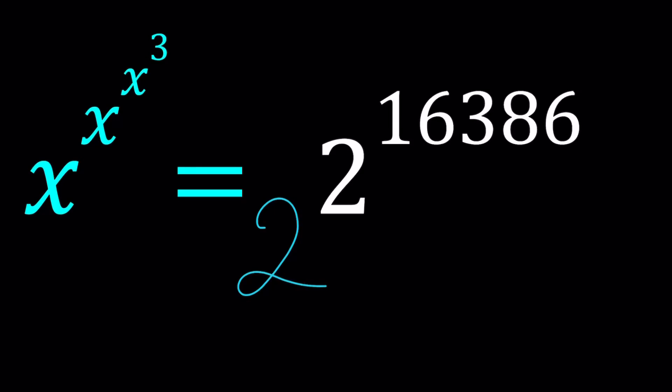Hello everyone. In this video we're going to be solving a homemade exponential equation. We have x to the power x to the power x to the power 3 equals 2 to the power 2 to the power 16,386. And we're going to be solving for x values.